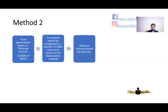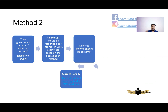The deferred income should be split into current liability as well as non-current liability. The amount that will be recognized as income in the SOPL next year should be shown as a current liability.